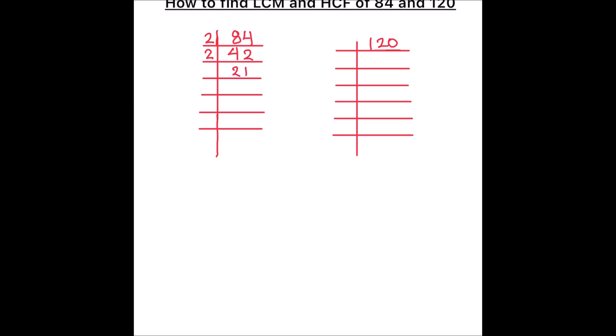Now this is an odd number, so we use the next prime number 3. 3 times 7 is 21, and 7 is a prime number divisible by 7. So 7 times 1 is 7.